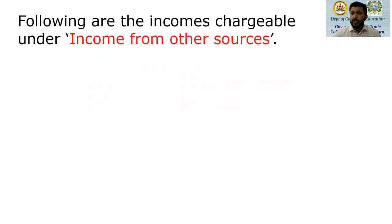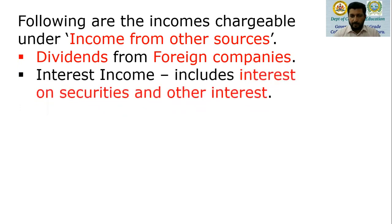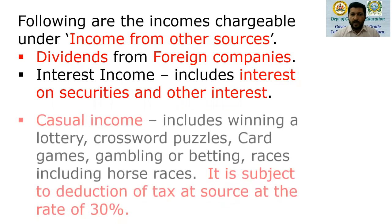Now, which are the incomes chargeable under the head other sources? First, dividend from foreign companies. Point to note: for the previous year 2019-20, dividend from Indian companies is exempt, but dividend from foreign companies is taxable. Next, interest income, including interest on securities and other interest — such as interest on savings bank account, interest on recurring deposit account, or interest on any other company deposits.